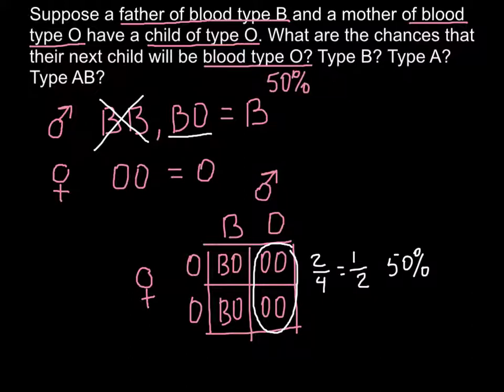The next question: blood type B. As you see here, 50% of their progeny would belong to blood group B. So another 50% would belong to blood group B.